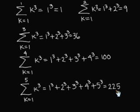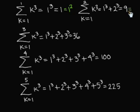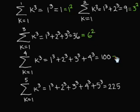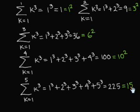It is almost immediate to notice that these numbers are all perfect square numbers. The summation from k equal 1 to 1 of k to the cube equals 1 squared. The summation from k equal 1 to 2 of k to the cube is equal to 3 squared. The summation from k equal 1 to 3 of k to the cube equals 6 squared. The summation from k equals 1 to 4 of k to the cube is equal to 10 squared. The summation from k equals 1 to 5 of k to the cube equals 15 squared.